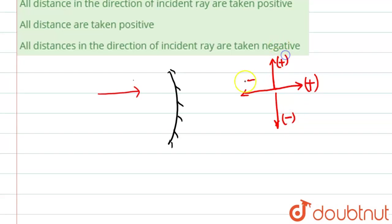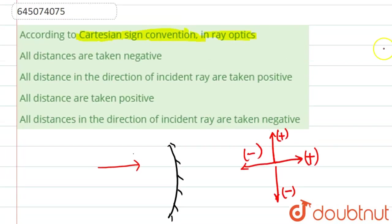And direction up is always positive and down is always negative. Okay, so basically these are the sign conventions that we take normally. So now what we have to take over here.